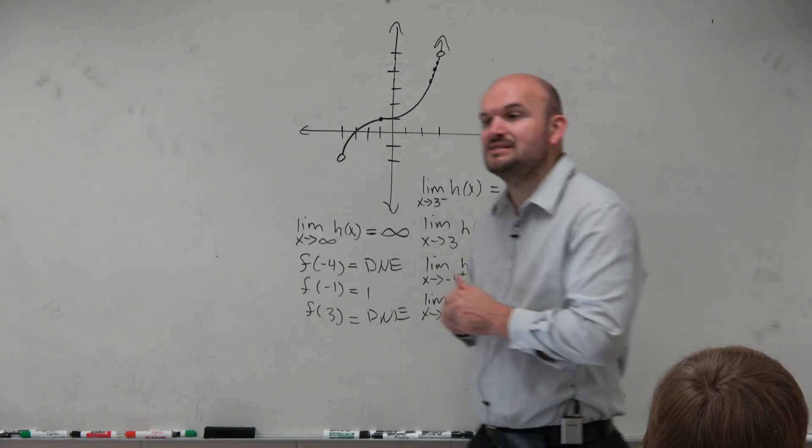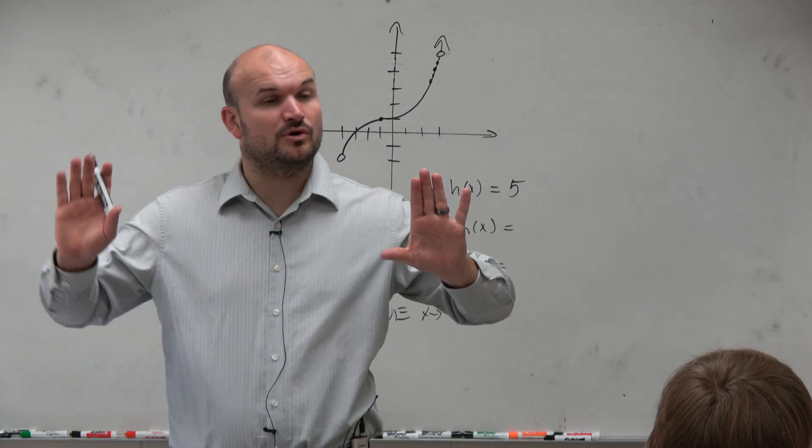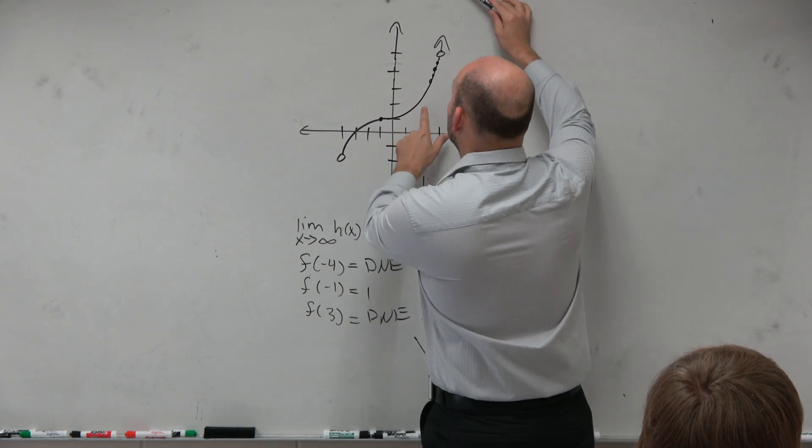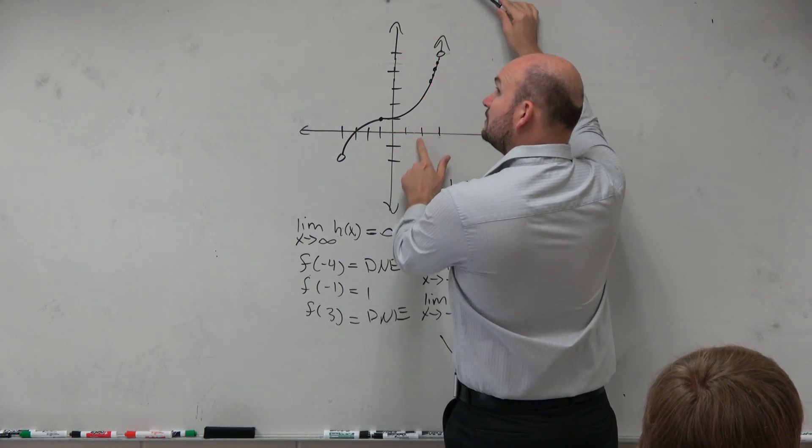Now, the general limit means basically what that means is I have to approach from the left and from the right. So what f of x value am I approaching from the left and the right? 5.